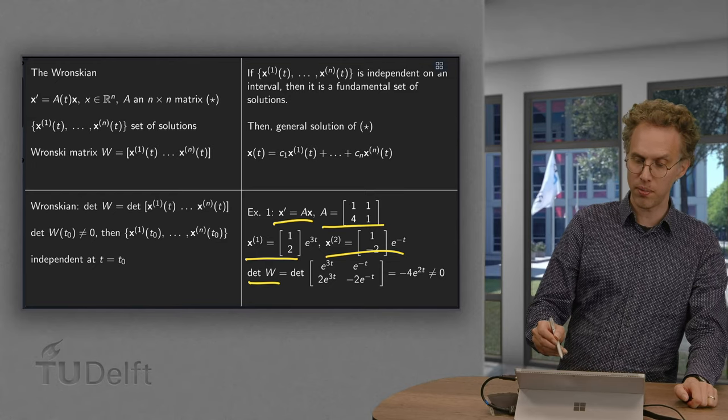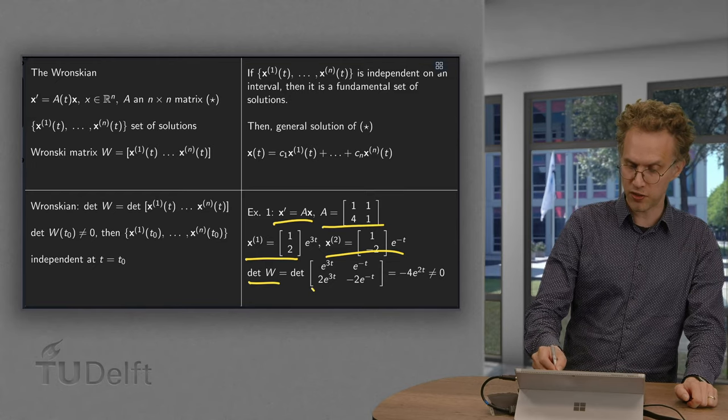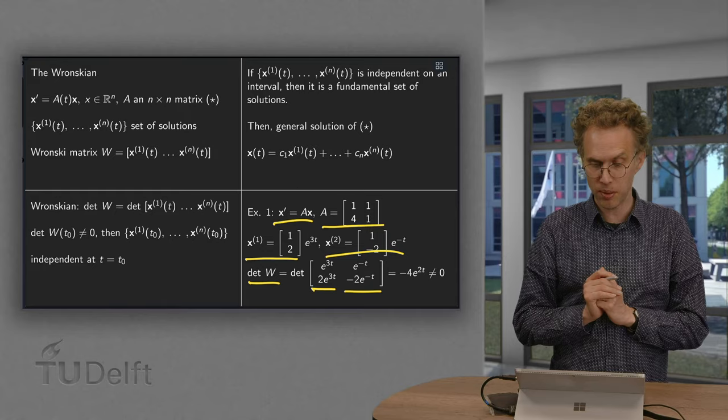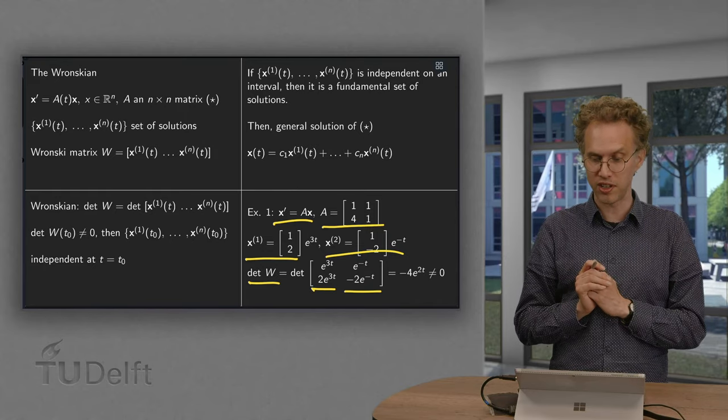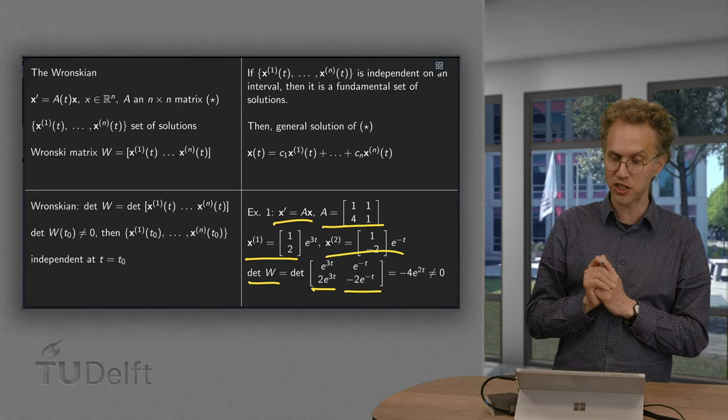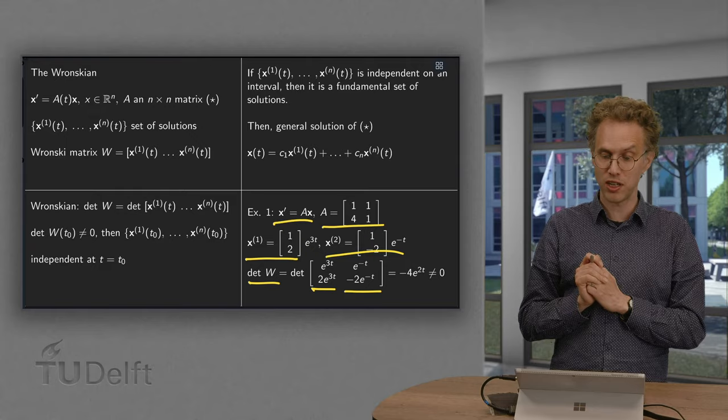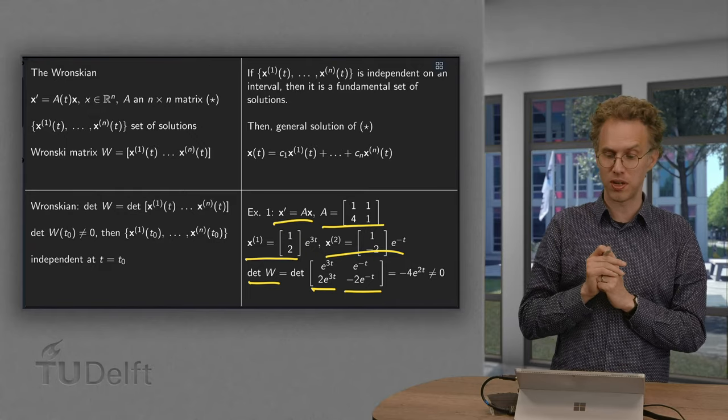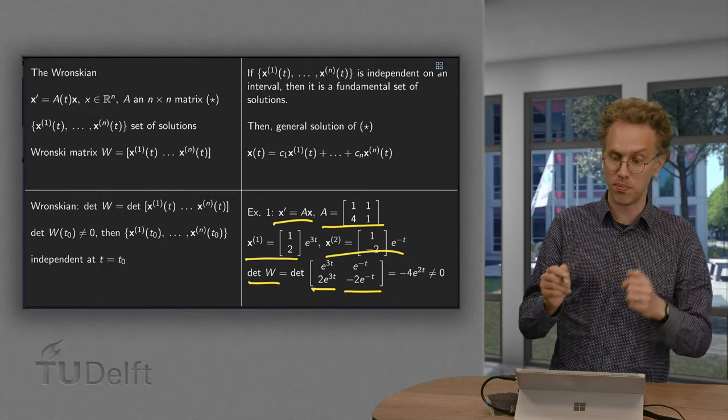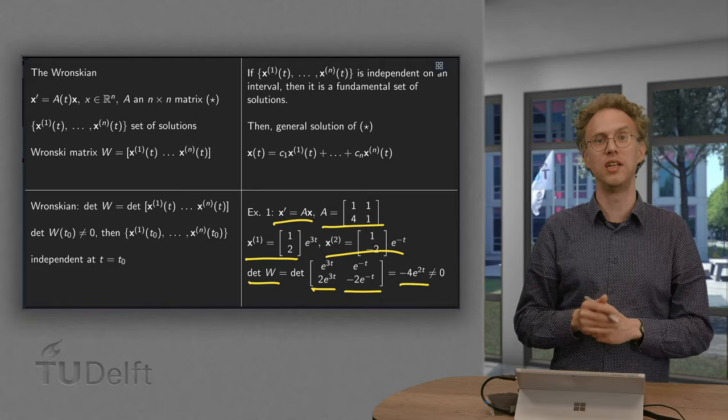So we form the determinant of the matrix W, where we put x^(1) and x^(2). We compute the determinant. We get e^(3t) times minus 2e^(-t), gives us minus 2e^(2t), minus 2 times e^(2t), gives us minus 4 times e^(2t).